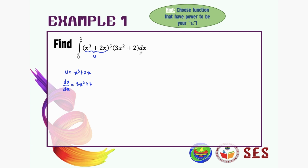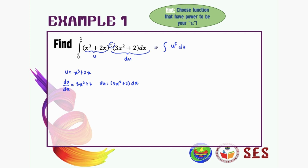Differentiate with respect to x, we get 3x squared plus 2. We can bring dx to the other side, so du is equal to 3x squared plus 2 dx, which matches the function in our integral. So we can rewrite this as the integral of u to the power of 5 times du.